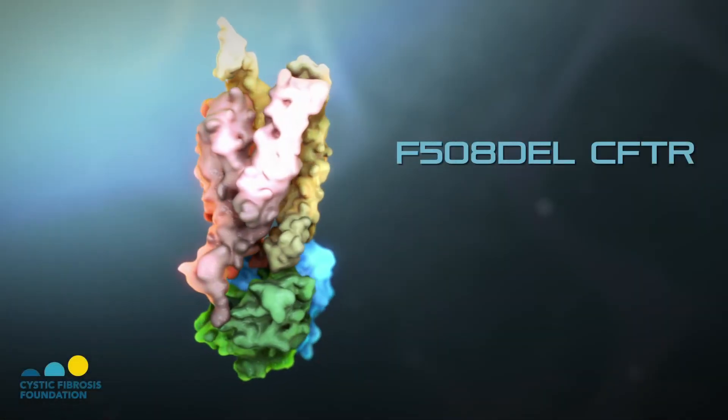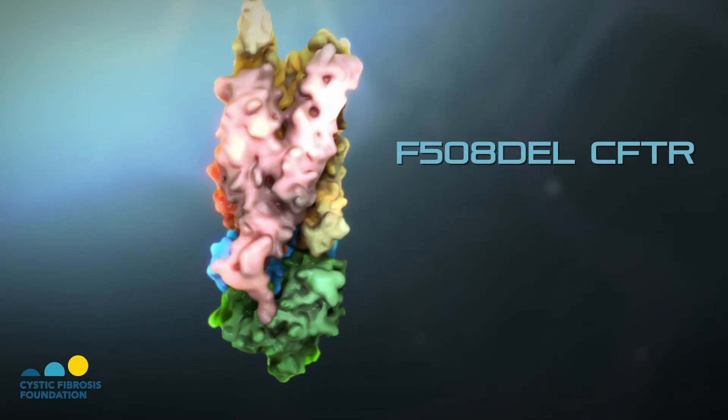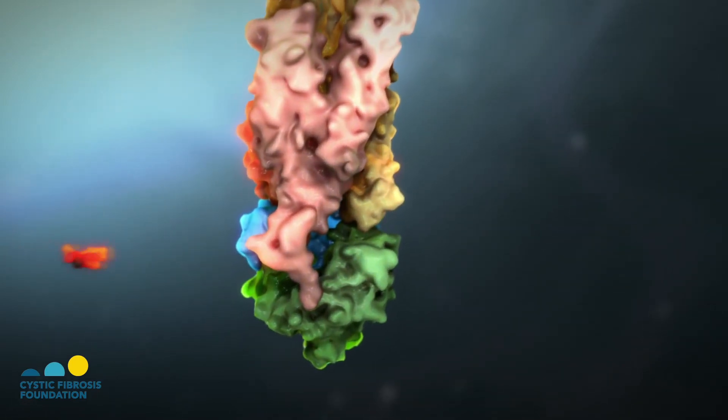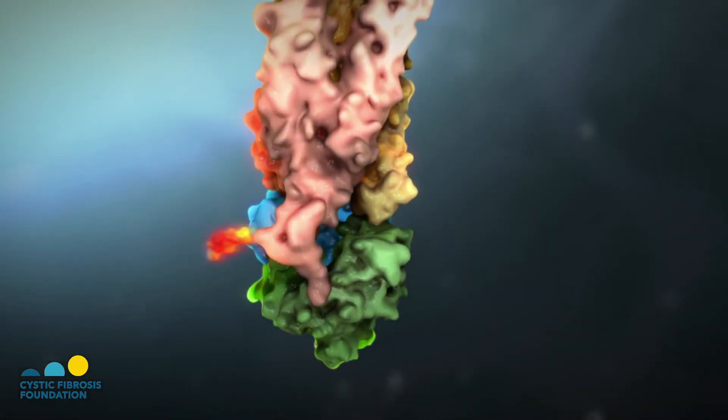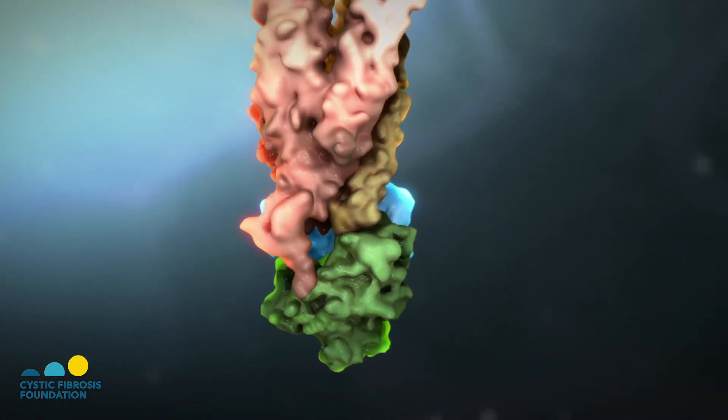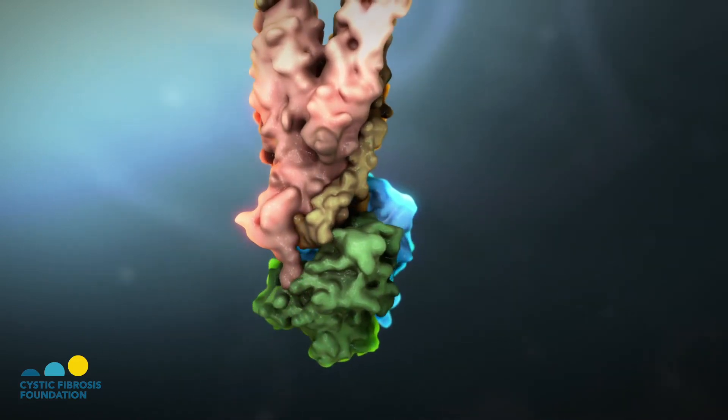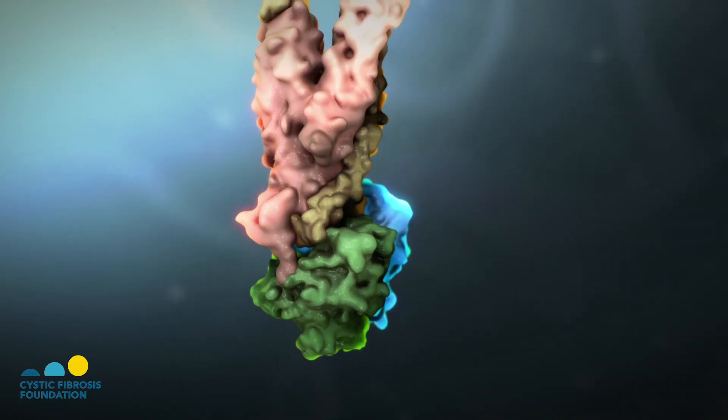New drugs are being developed to help fix the CFTR protein in people who have the F508-DEL mutation. These drugs are known as correctors. They bind to the CFTR protein and help the puzzle pieces fit together properly. The first corrector that has been developed and approved by the FDA is Lumacaftor.